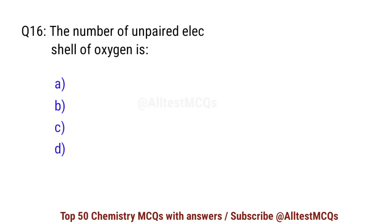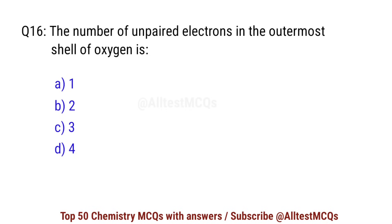Question number 16. The number of unpaired electrons in the outermost shell of oxygen is? Right option is B: 2.